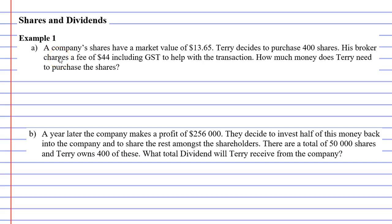In this video, we're going to complete example one. Question A says that a company's shares have a market value of $13.65. We'll underline the important parts as we go. Terry decides to purchase 400 of these shares, and his broker charges a fee of $44, including GST, to help with the transaction. How much money does Terry need to purchase the shares?